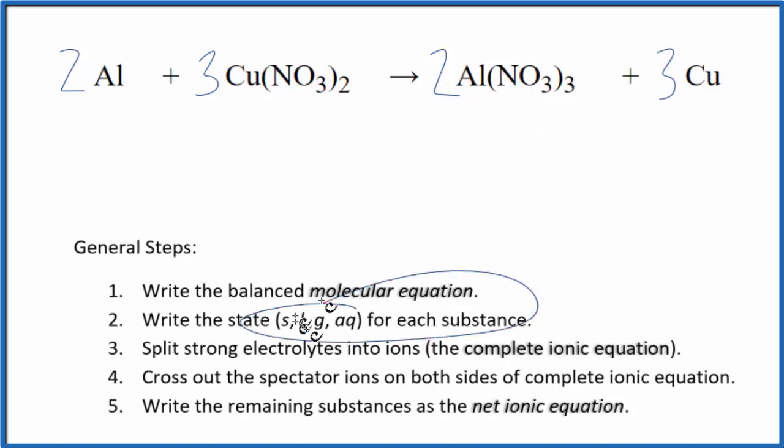So now we need to write the state for each substance. Aluminum, that's a metal. It's a solid. Nitrates are very soluble. Put a little AQ because it'll dissolve, dissociate in water, split into its ions. We have another nitrate group over here with the aluminum nitrate. That's going to be aqueous. Copper is a solid. So this is a single displacement reaction. The aluminum pushes the copper out and then it's bonded with this nitrate group here.